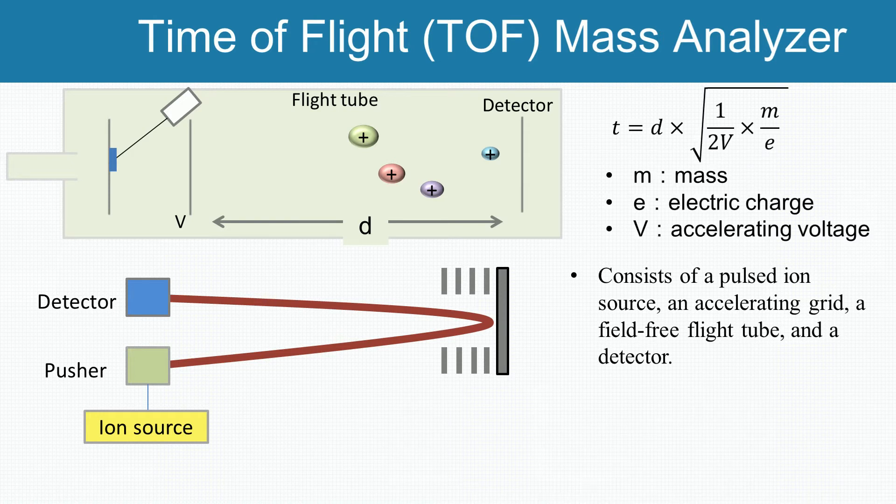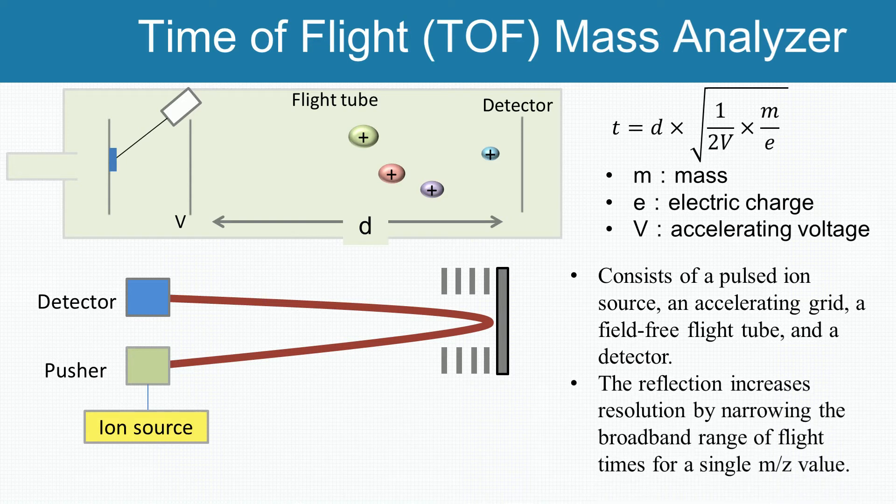At high masses, not all the ions of the same mass-to-charge values reach their ideal velocities. To fix this problem, often a reflector which consists of a series of ring electrodes with high voltage is added to the end of the flight tube. Because of the high voltage, an ion is reflected in the opposite direction when it enters the reflector. For the ions of same mass-to-charge value, faster ions travel further than the slower ones into the reflector. In this way, both the slow and fast ions of the same mass-to-charge value reach the detector at the same time. The reflector increases resolution by narrowing the broadband range of flight times for a single mass-to-charge value.